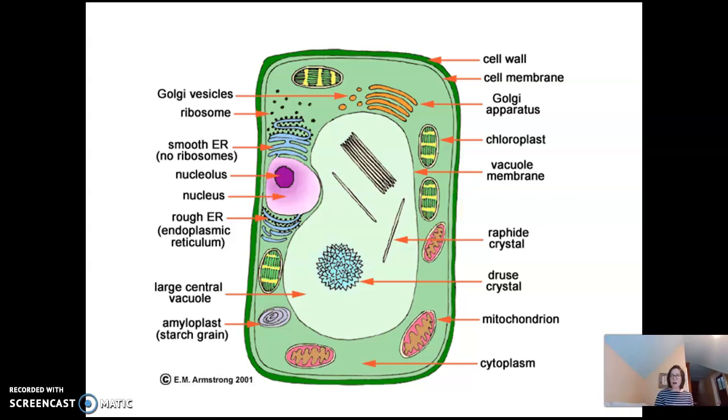Another feature of this cell that gives it away as a plant cell are these chloroplasts. Chloroplasts are important for a plant cell. They give the cell a greenish color, but they function in photosynthesis. So cell wall, central vacuole, and chloroplasts tell us that this is a plant cell.